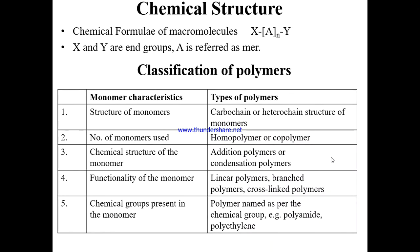Now coming to the chemical structure. The structure of the fiber can be divided into two categories: chemical structure and physical structure. I shall first discuss the chemical structure of the fiber. The chemical formula of a macromolecule or polymer can be defined as X(A)nY, where X and Y are the end groups, A is the repeat unit or monomer, and n is the degree of polymerization.